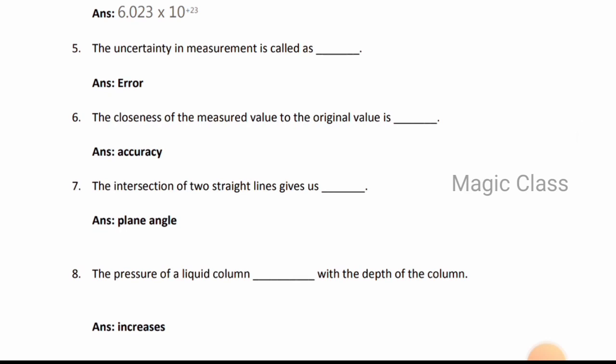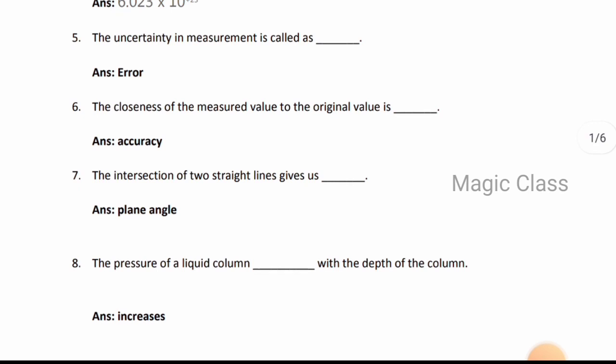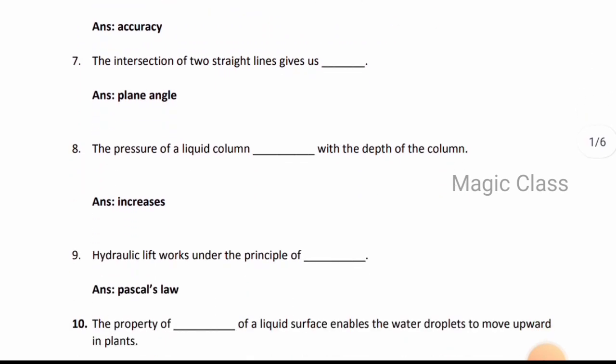Answer: 6.023 x 10^23. Question 5: The uncertainty in measurement is called - error. Question 6: The closeness of the measured value to the original value is - accuracy. Question 7: The intersection of two straight lines gives us - plane angle.